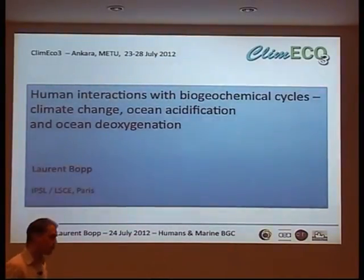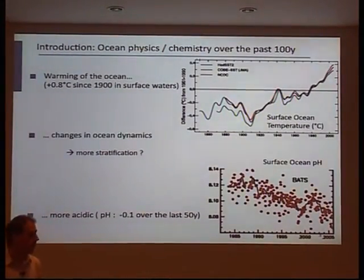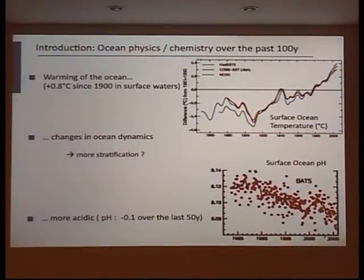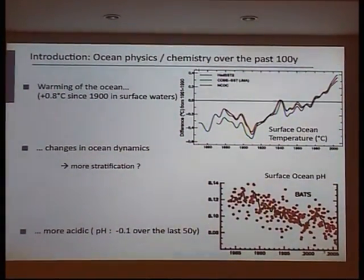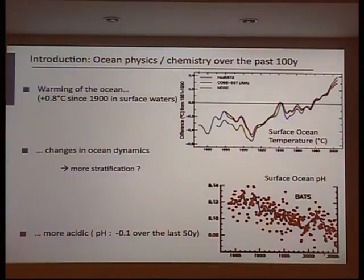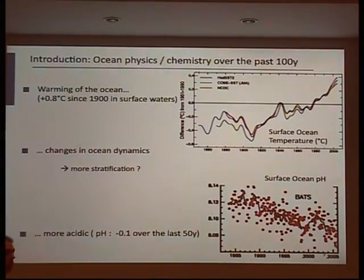I start with a few general slides, beginning with these iconic figures — not as famous as the Keeling curve. You have here the mean, or average, sea surface temperature evolution from 1860 to 2000, reconstructed by several groups. You can see this warming of up to one degree over the past century, and we'll be looking at the impact of this warming on ocean dynamics and marine primary production.